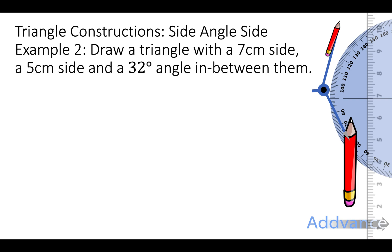Now we're going to do another one and this one is a side angle side where you're given two sides and an angle. It says draw a triangle with a 7cm side, a 5cm side and a 32 degree angle in between them.